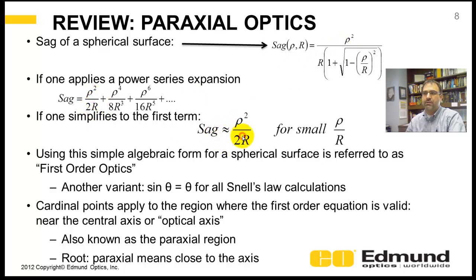If we take this first term here, your sag is ρ² over 2R, and this is valid when you have a small ρ divided by R, aperture divided by radius, or if your radius is much larger than your aperture.